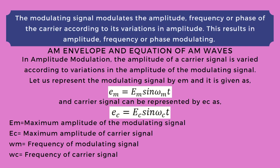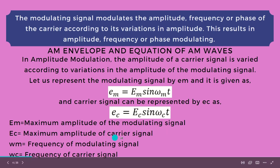We are going to see the AM envelope and equation of AM waves. In amplitude modulation, the amplitude of the carrier signal is varied according to the variation in amplitude of the modulating signal. The modulating signal is represented as eM = EM sin(ωM t), and the carrier signal as eC = EC sin(ωC t), where EM is the maximum amplitude of the modulating signal, EC is the maximum amplitude of the carrier signal, ωM is the frequency of the modulating signal, and ωC is the frequency of the carrier signal.